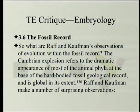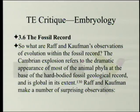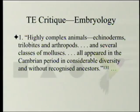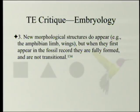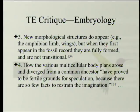The fossil record: Ralph and Kaufman's observations on evolution within the fossil record include the Cambrian explosion — the dramatic appearance of most animal phyla at the base of the hard-bodied fossil record, global in extent. Highly complex animals — echinoderms, trilobites, arthropods, and several classes of mollusks — all appeared in the Cambrian period in considerable diversity and without recognized ancestors. Transitional forms are largely hypothetical. New morphological structures do appear — for example the amphibian limb and wings — but when they first appear in the fossil record they are fully formed, not transitional. How multicellular body plans arose and diverged from a common ancestor has proved fertile ground for speculation because there are so few facts to restrain the imagination.